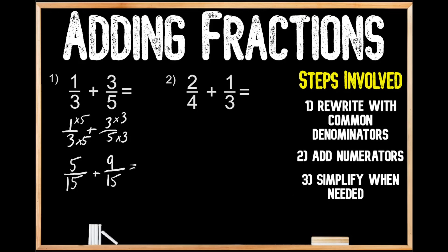Now we can move on to step two, which is to add the numerators. The reason it says add the numerators rather than add the fractions is because when adding fractions, the value of the denominator doesn't change in our answer — it's still 15. When we add five plus nine we get 14. For step three, simplify when needed: since there's no common factor between 14 and 15 other than one, the fraction is already in its lowest terms. So one third plus three fifths equals 14 over 15.